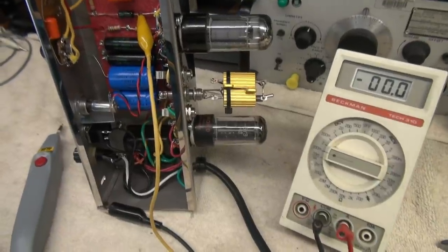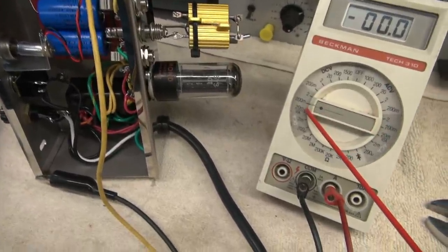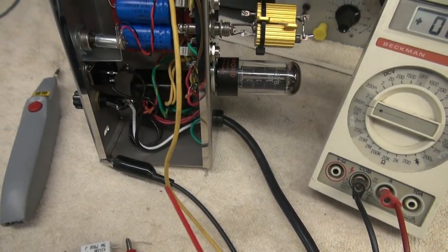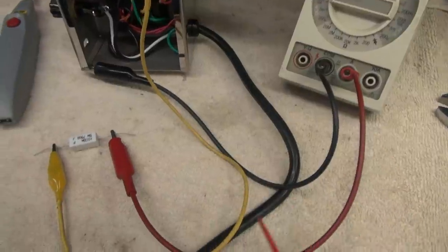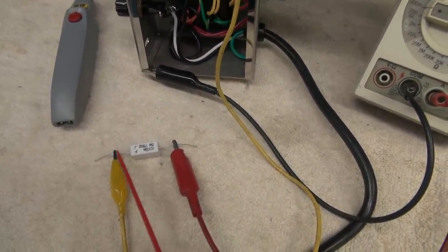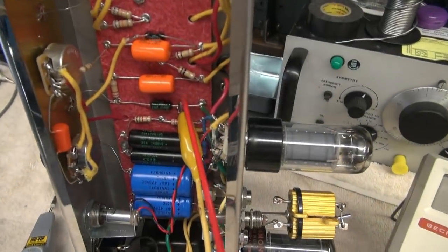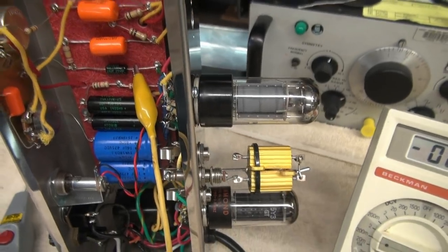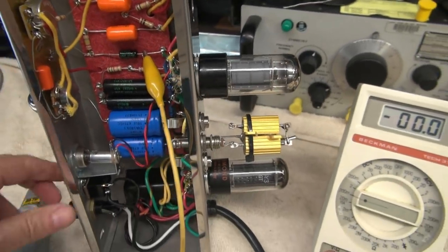The next thing I do is put my meter in milliamp mode, DC milliamps. My negative lead goes to the chassis, my positive lead goes to the resistor I'm going to try, and the output of that resistor goes up to the cap which goes to pin 8 of the 6V6. Now we can measure the current right through the tube.